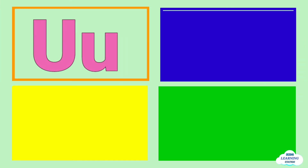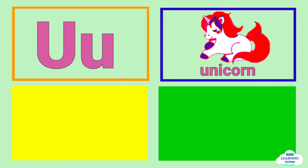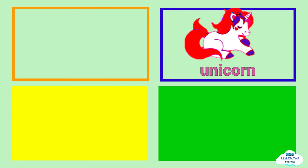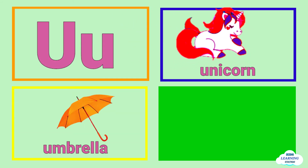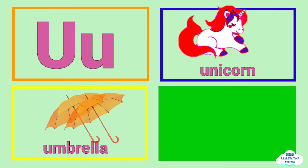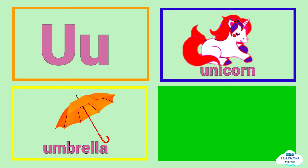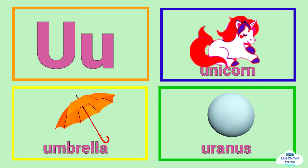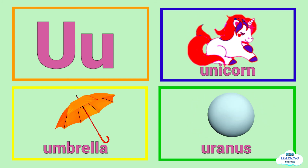U is for unicorn, unicorn. U is for umbrella, umbrella. U is for uranus, uranus.